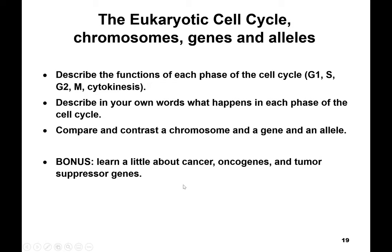Your objectives for this video were to describe the functions of each phase of the cell cycle and describe everything in your own words, because doing it in your own words is the way you learn. Be able to compare and contrast a chromosome, a gene, and an allele — telling me the differences and similarities — you might see that on a quiz or exam. And the bonus part of this video was learning a little bit about cancer, oncogenes, and tumor suppressors, because they all relate to cell cycle.